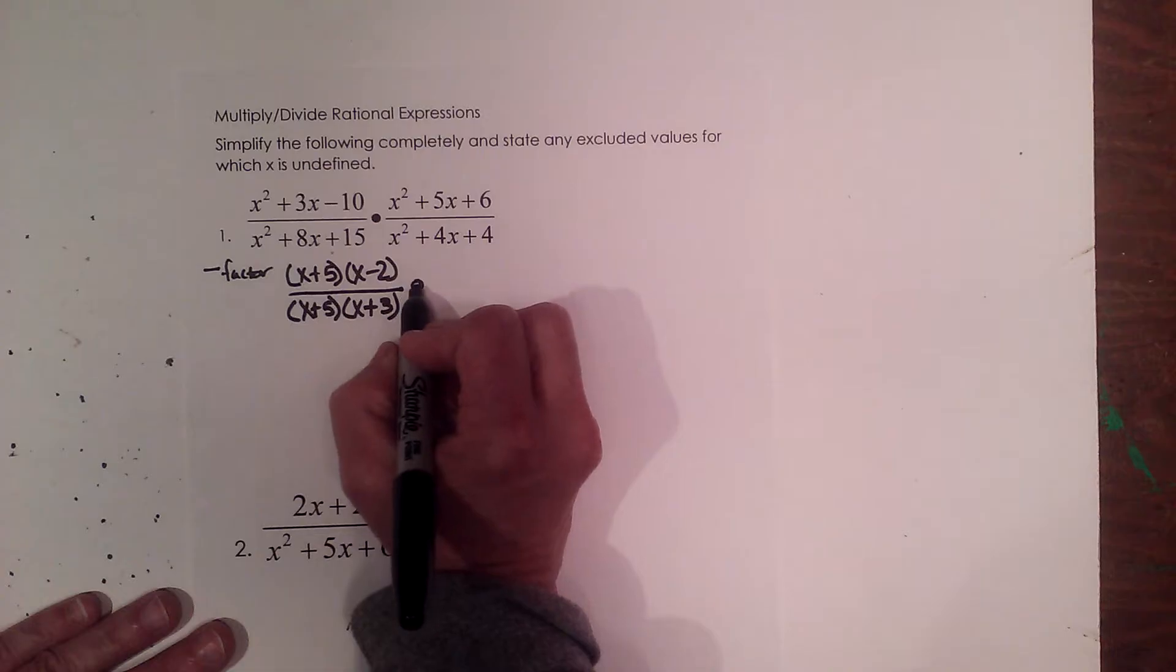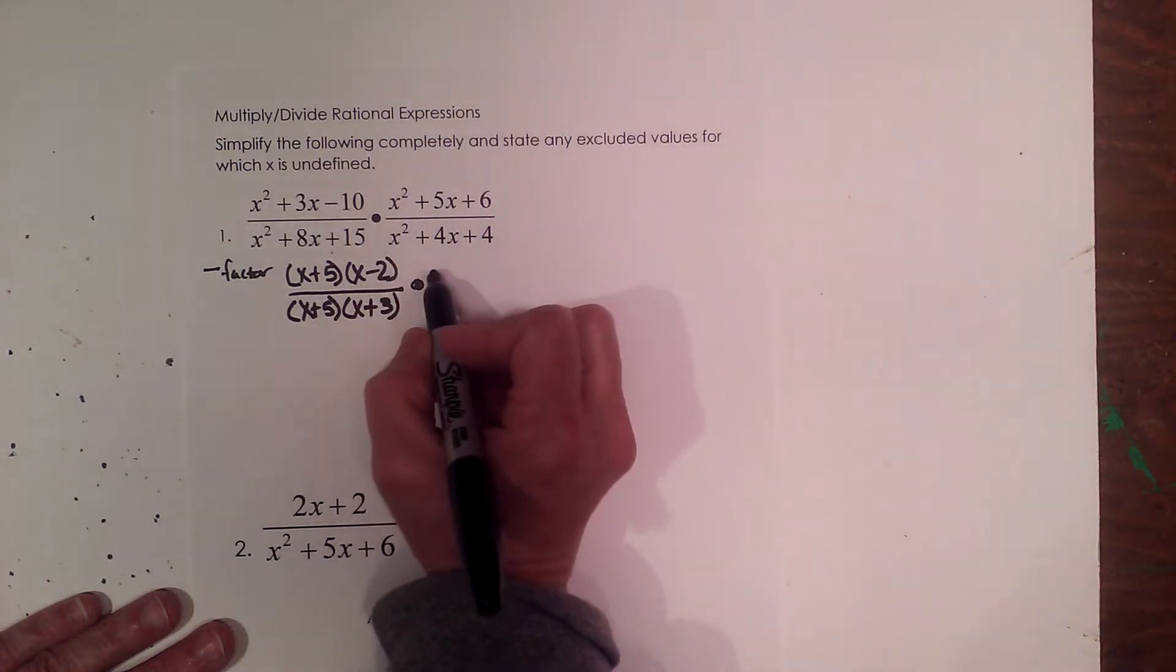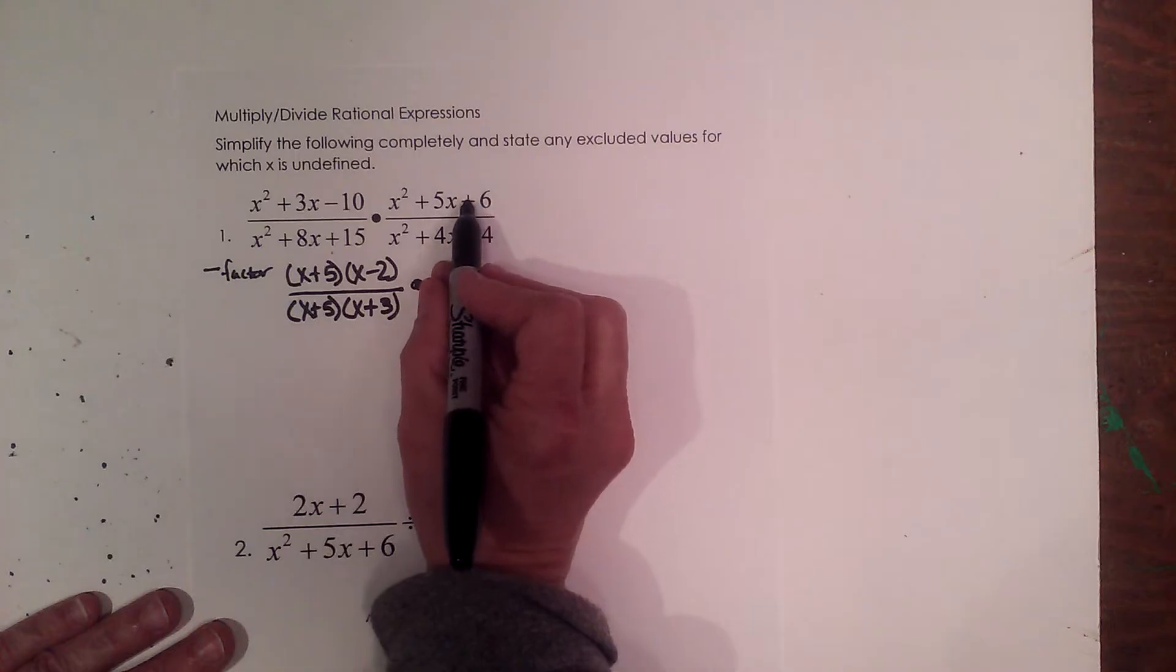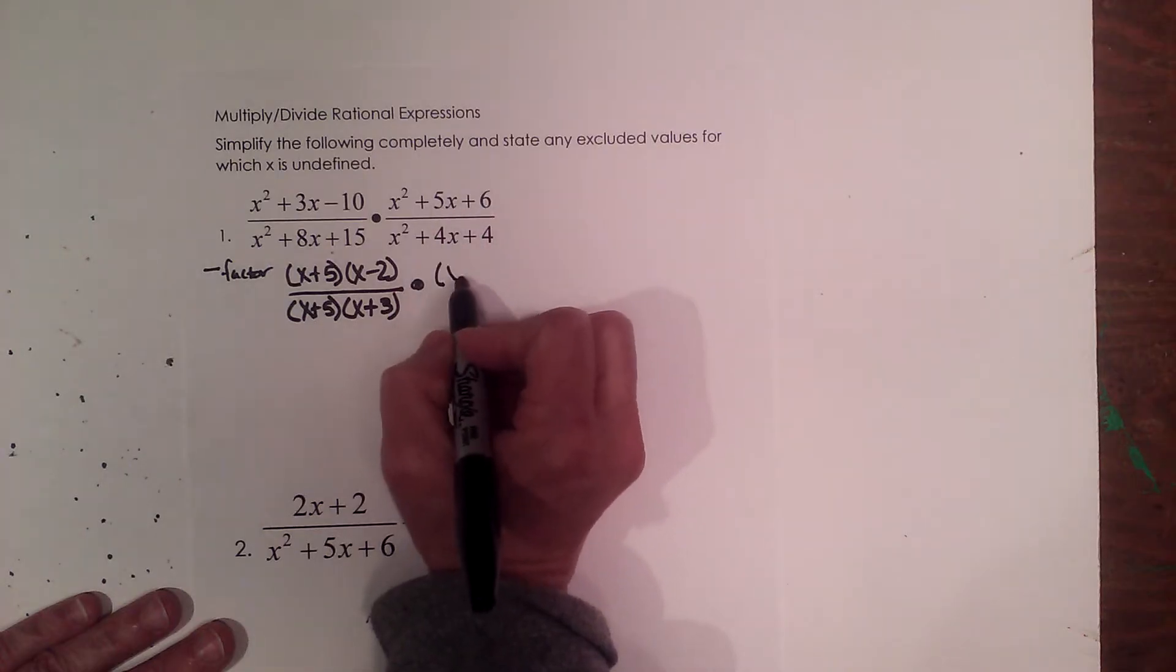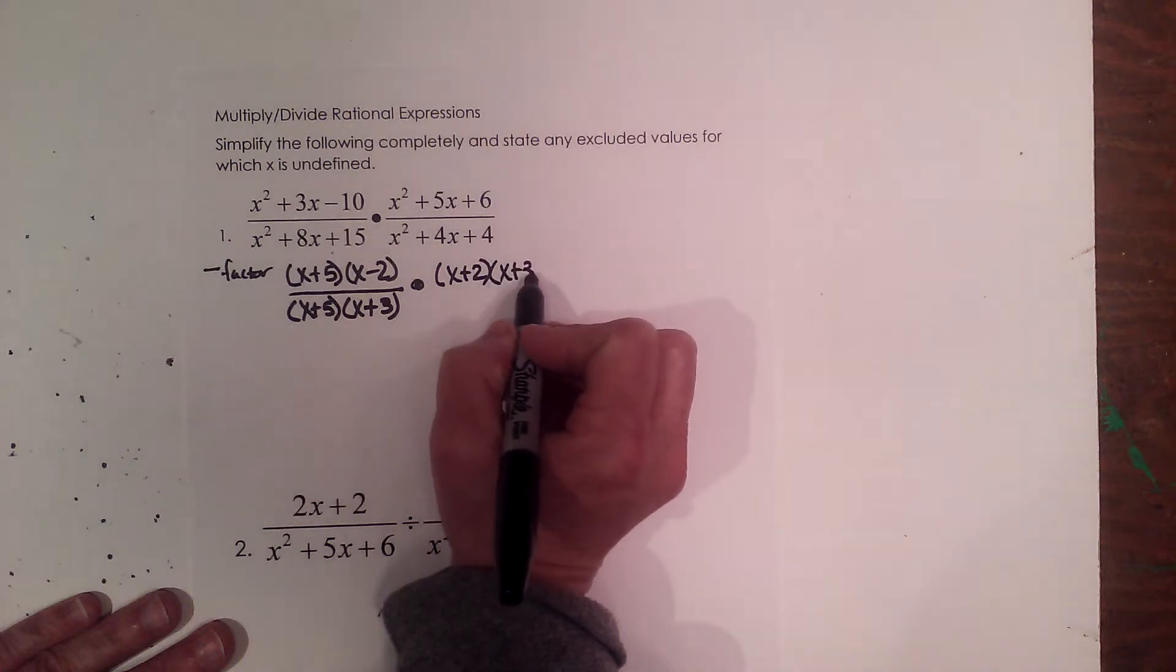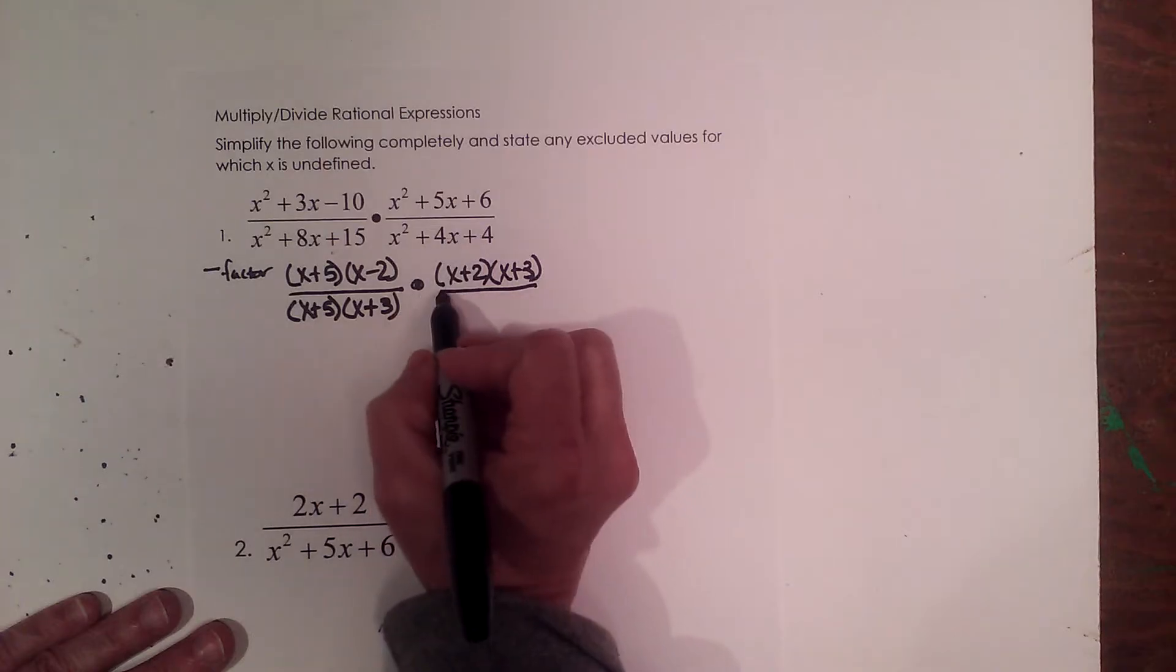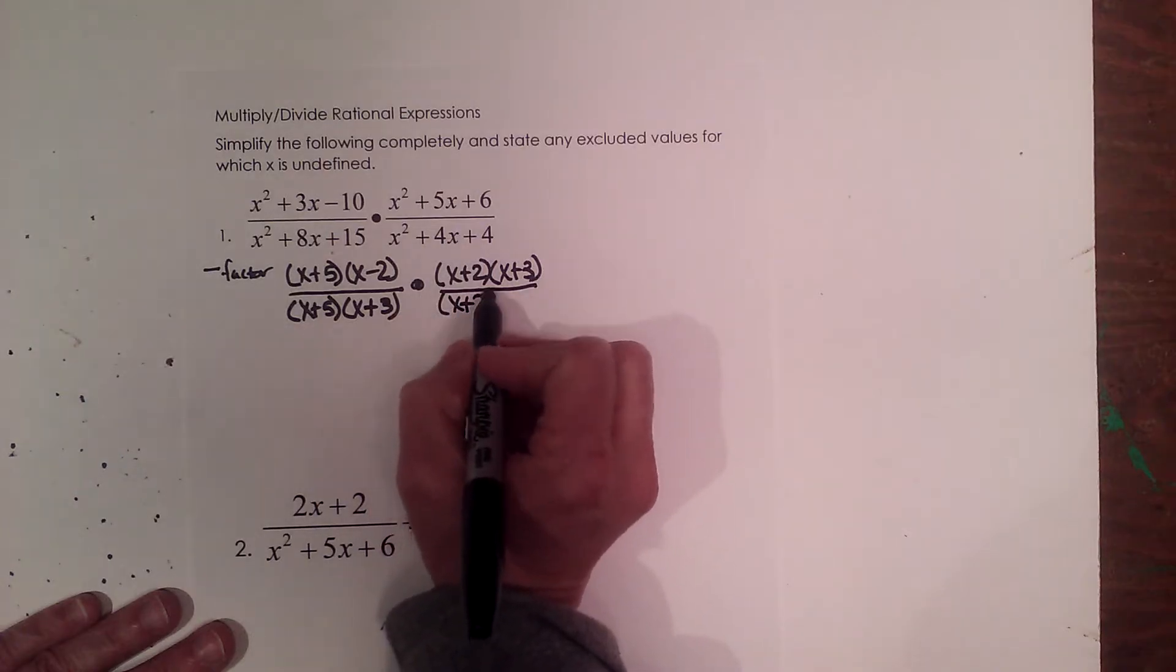So that's how those factor. I'm going to do the same thing with my second expression. I'm going to factor these. So I'll multiply to 6 and adds to 5, and that's x plus 2 and x plus 3. And then the denominator, what multiplies to 4 and adds to 4, x plus 2 and x plus 2.